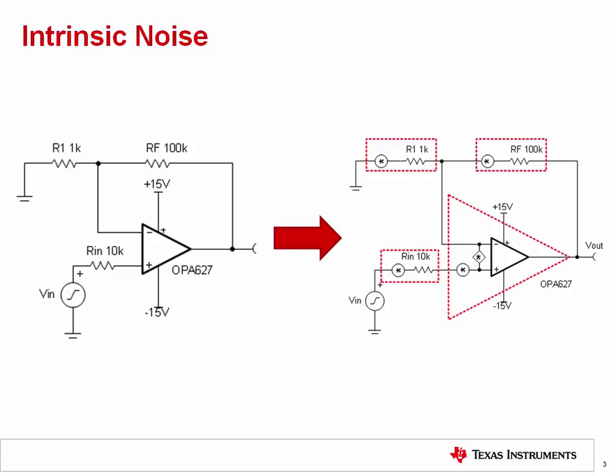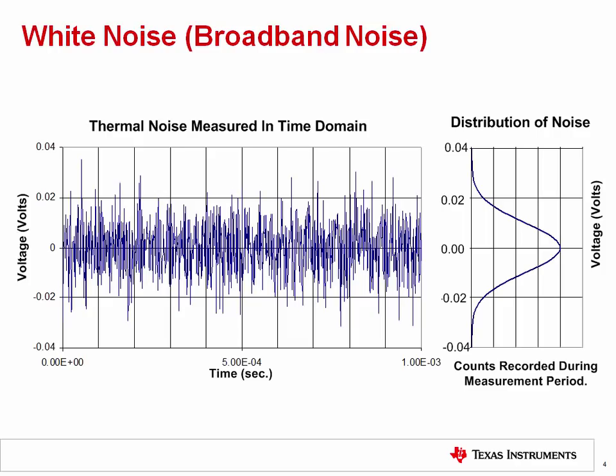But first, let's look at some general categories of noise. This slide shows the time domain waveform for white noise, also known as broadband noise. The time domain waveform is what you would see if you measured noise with an oscilloscope. Notice that the horizontal axis is 1 millisecond full scale. Taking the reciprocal of the full scale time gives a frequency of 1 kilohertz. In general, broadband noise is considered to be in the middle to high frequency range, that is, frequencies greater than 1 kilohertz.